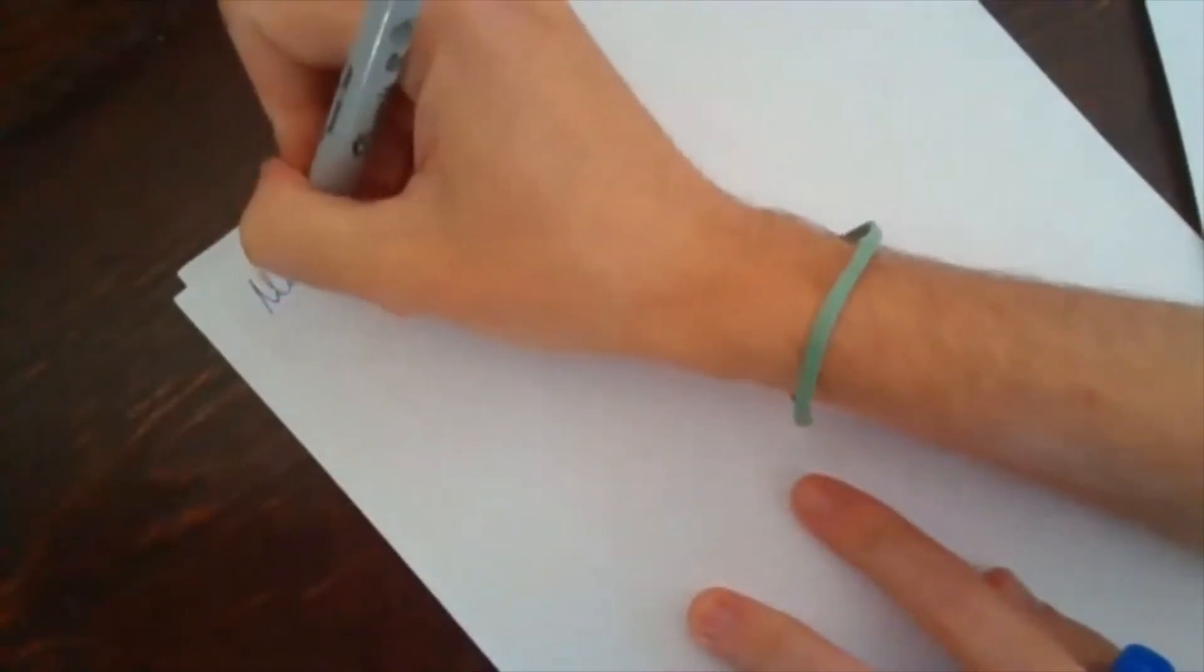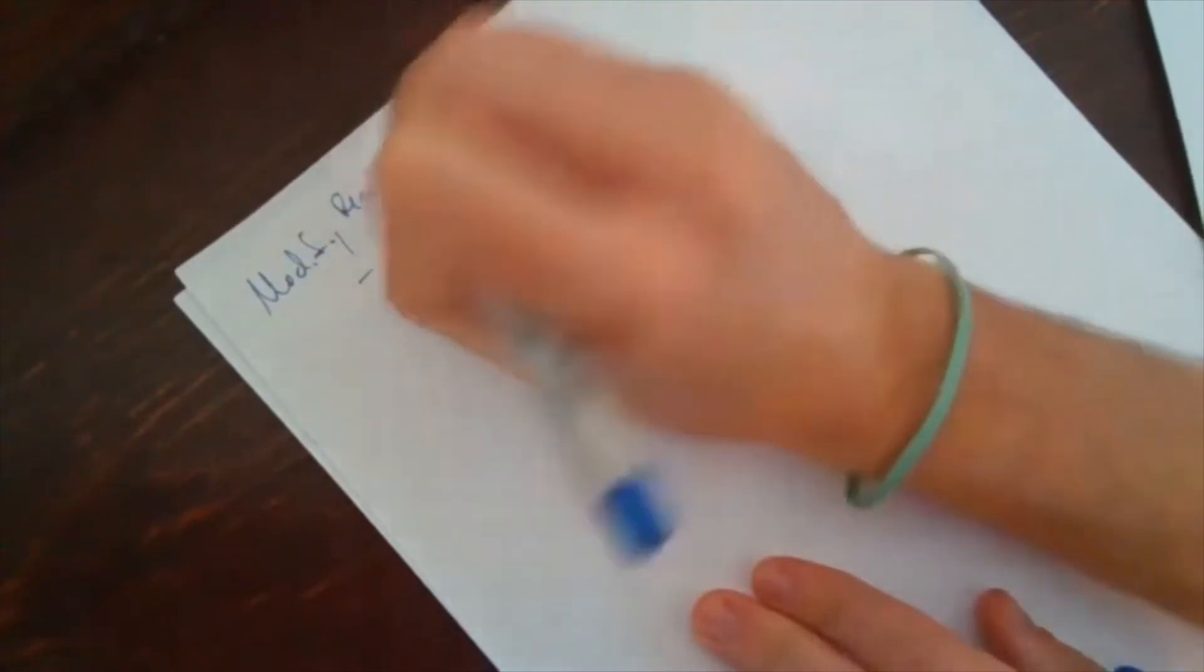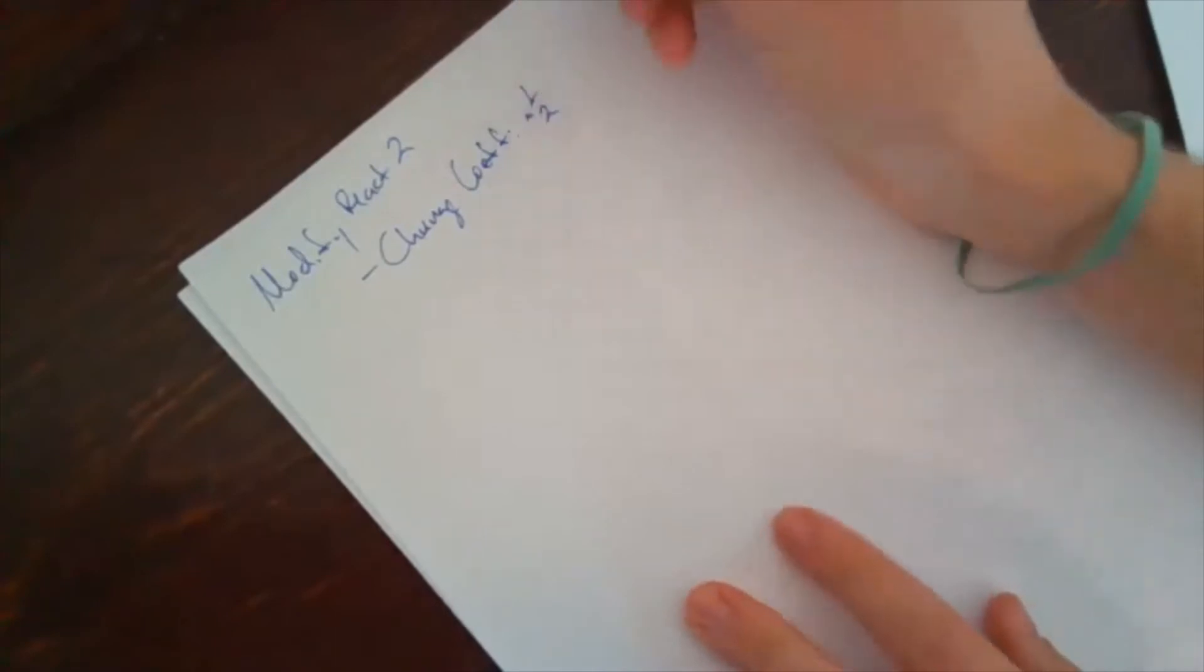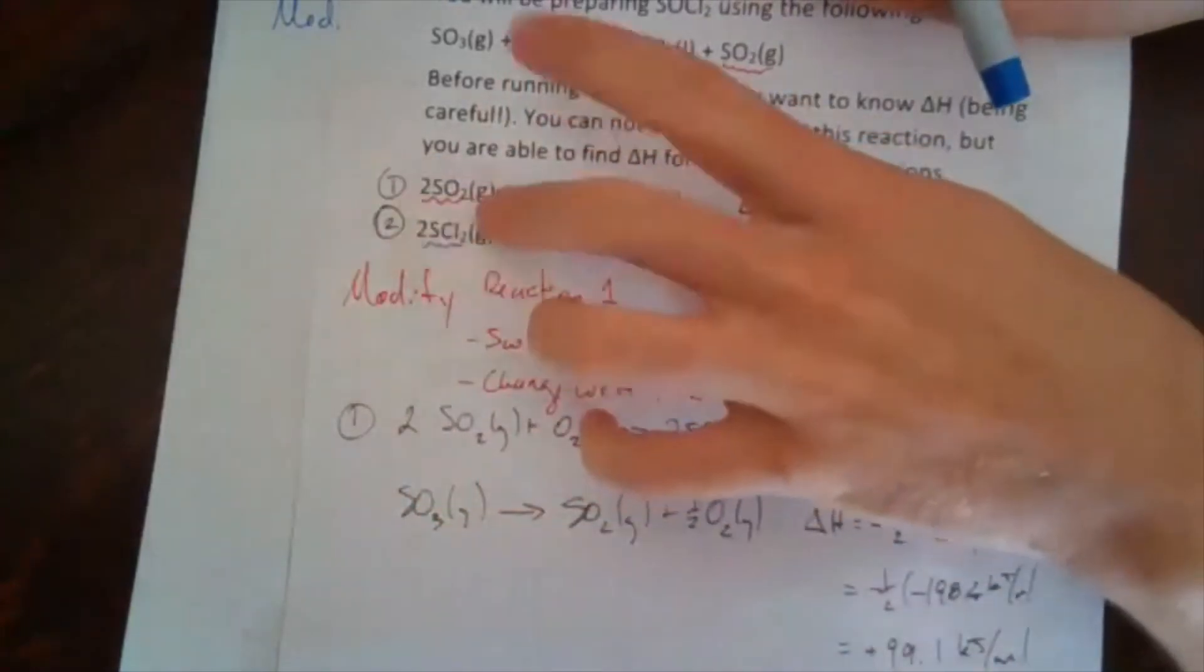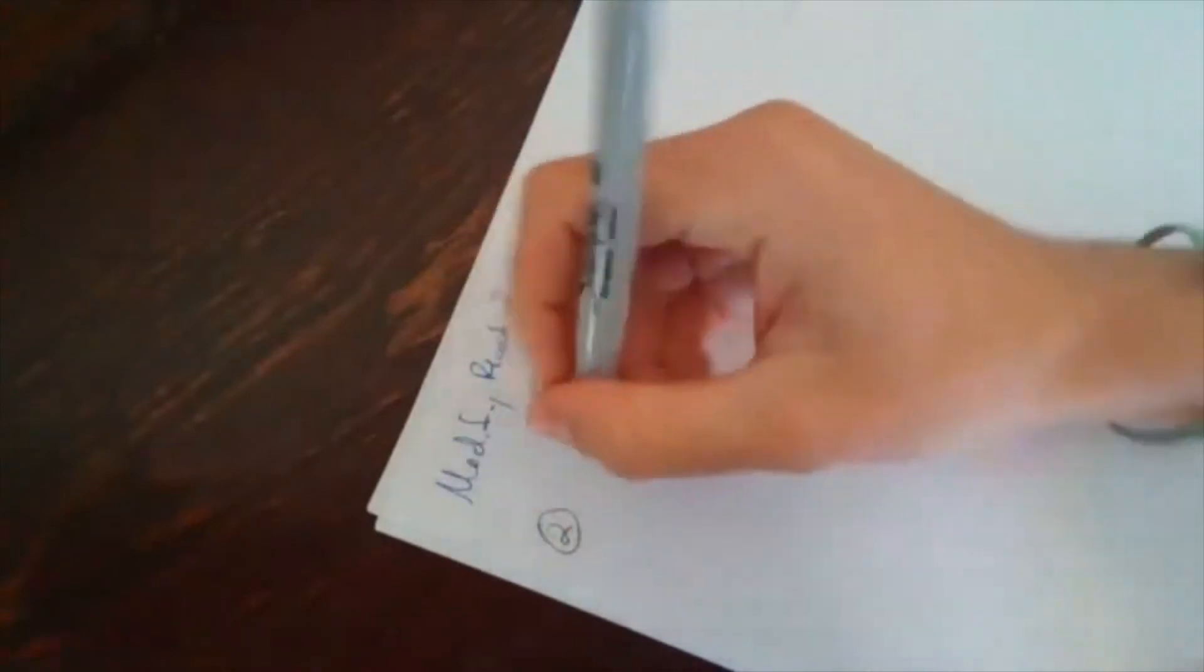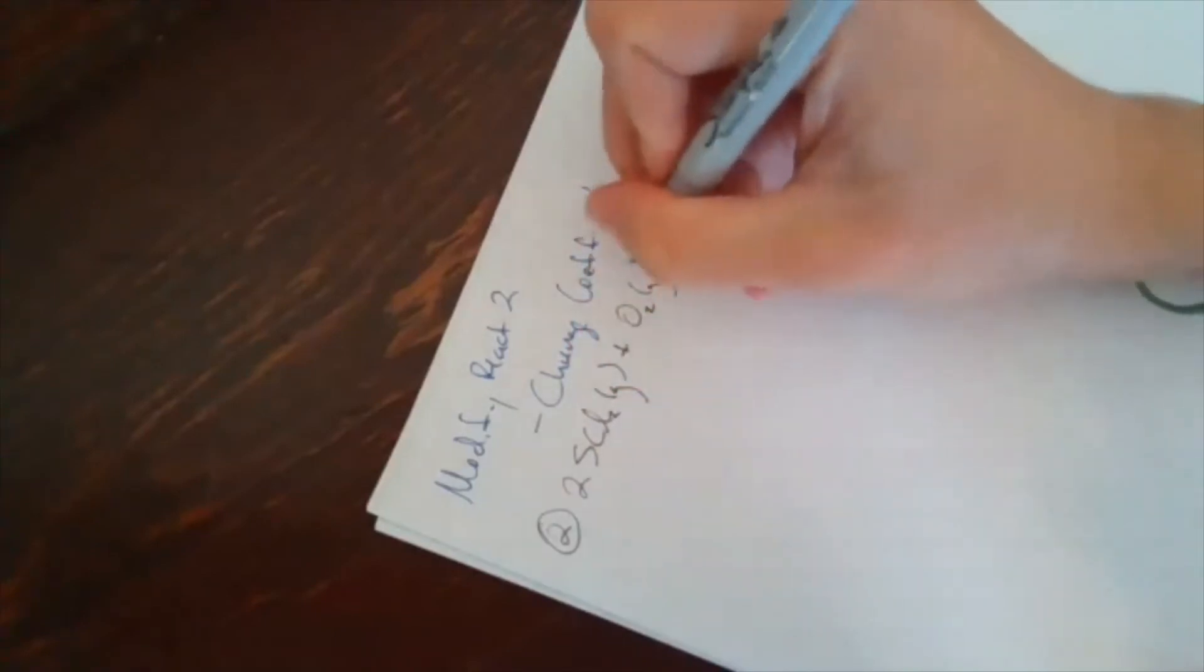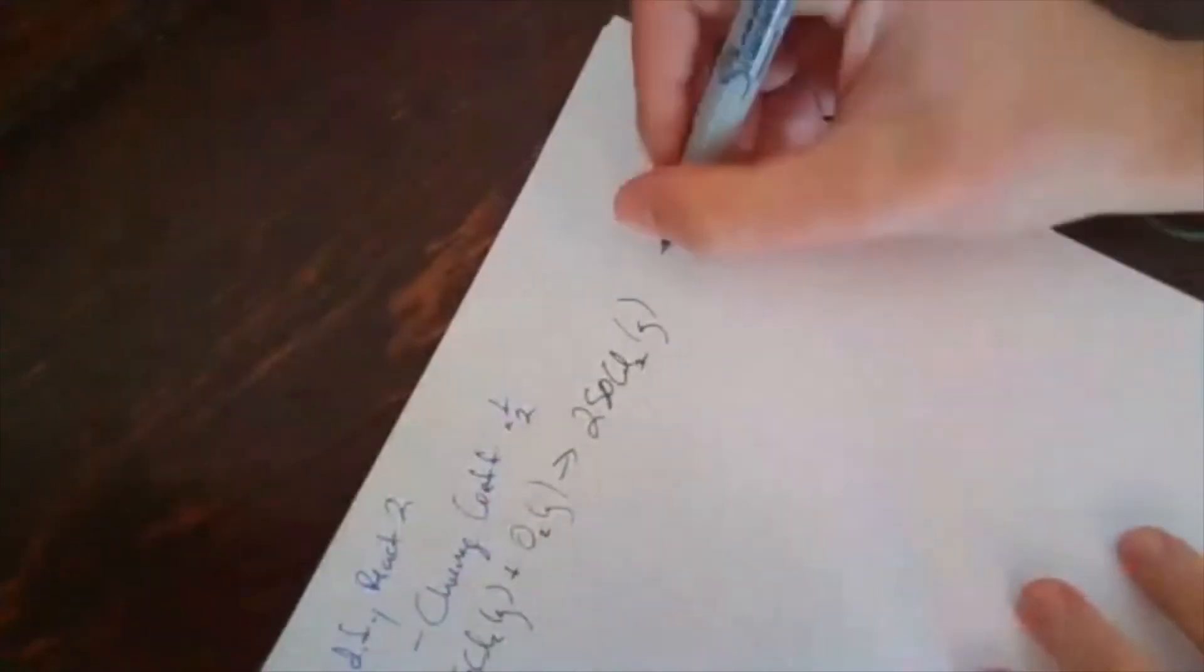So if I modify reaction two, the sides are fine, I just need to change coefficients. And what I need to do is I need to multiply by one half, because my reference is a two, my target has a one. But they're on the correct sides, so that's good. So what I can do is I can take that and write it out. So reaction two is 2SCl2 gas plus O2 gas becomes 2SOCl2 gas. And I know a delta H on that.